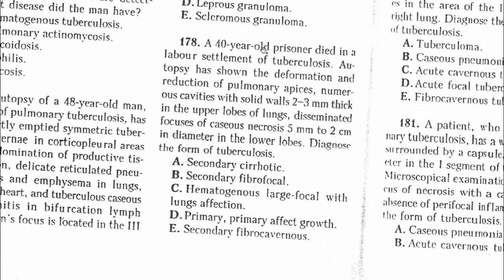Question 178: A 40-year-old prisoner died in a lung settlement of tuberculosis. Autopsy showed deformation and reduction of pulmonary apices, numerous cavities with solid walls 2-3 cm in size in the upper lobe of the lungs, and disseminated foci of caseous necrosis in the lower lobes. The presence of cavities makes it easier to diagnose this as cavitary secondary tuberculosis — secondary fibrocavernous tuberculosis. The answer is E.